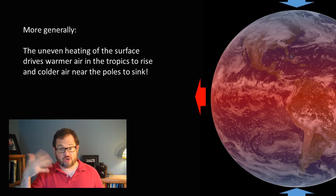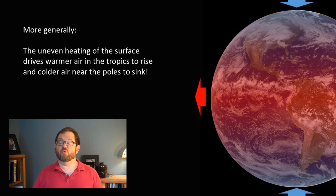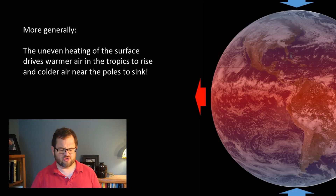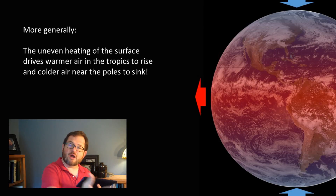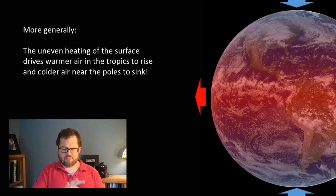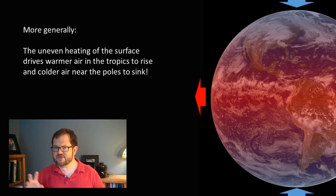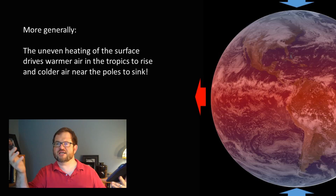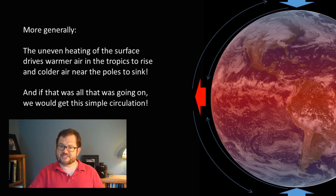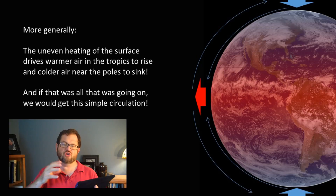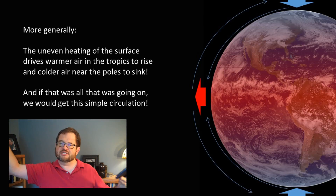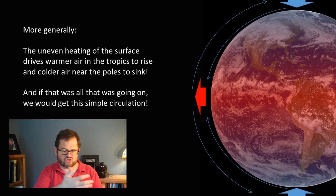More generally, the warm air near the tropics is trying to rise — warm air rises. Near the equator the warm air rises, and at the poles cold air tries to sink. From a very simplistic point of view, we can put in arrows making a simple circulation where warm air rises at the equator, spreads out, sinks near the poles where it becomes cold, and then returns towards the equator at the surface. That should happen in both the Northern and Southern Hemisphere.